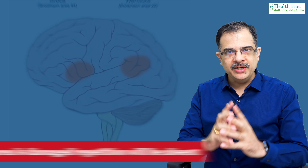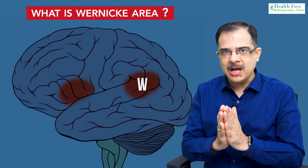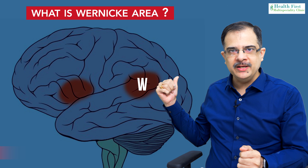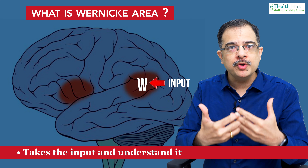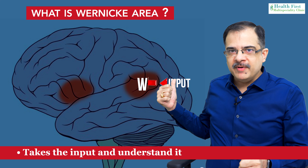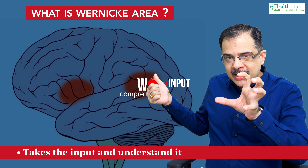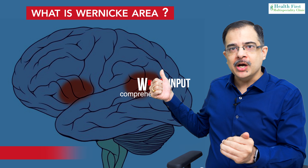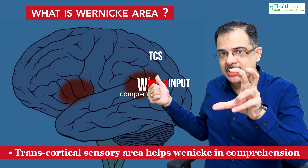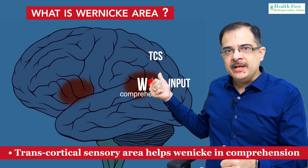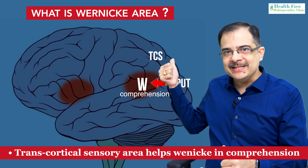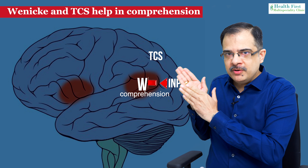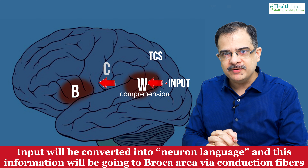Now let's understand what the Wernicke's area does. Wernicke's area is the area which helps in comprehension. You can remember that Wernicke's area takes the input — for example, if I ask a patient 'what is your name?', that is the input going to the patient. Wernicke's area takes that input, comprehends that question, and this comprehension of the Wernicke's area is helped by the transcortical sensory area. Since sensory means input, Wernicke's is helped by the transcortical sensory area — together they help in comprehension.